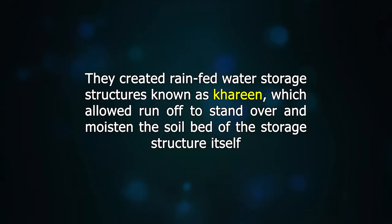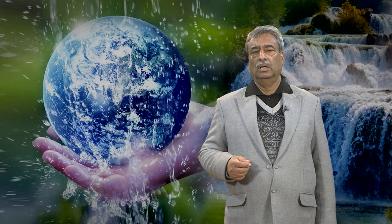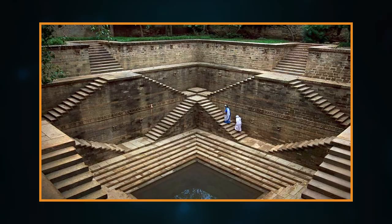Paliwal Brahmans in the arid region of Rajasthan developed a very useful method of water conservation for irrigation. They created rain-fed water storage structures known as 'Kharim,' which allowed runoff water to stand over a moist soil bed of the storage structure itself — this piece of land was later used for growing crops. 'Haveli' is another unique type of rainwater harvesting employed in Madhya Pradesh. The terrain has heavy black clay which can hold a lot of water but hardens and breaks as it dries. Bunds are built to collect rainwater and are released a few days before sowing through an aperture in the embankment; the discharge softens the soil, allowing wheat and gram sowing to rarely require a second watering.